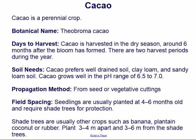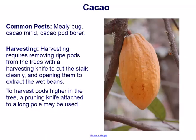Propagation is from seed or vegetative cuttings. Seedlings are usually planted at four to six months old and require shade trees for protection. Shade trees are usually other crops such as banana, plantain, coconut, or rubber, planted three to four meters apart and three to six meters from the shade trees.